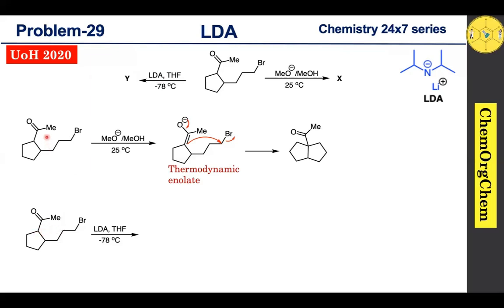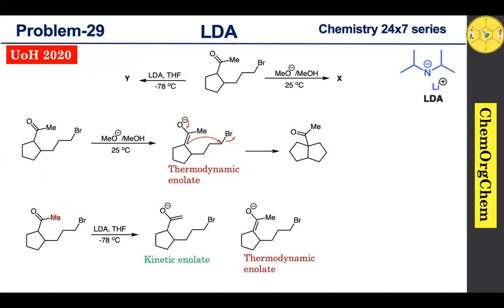Coming to our substrate — we already saw this substrate in the first case. This position is more sterically crowded compared to this position. Since LDA is a bulky base, it will definitely take the proton from this methyl group, predominantly generating the kinetic enolate ion. After generation of the kinetic enolate ion, this electron shifts here, and this electron attacks this carbon, kicking off the Br minus ion.